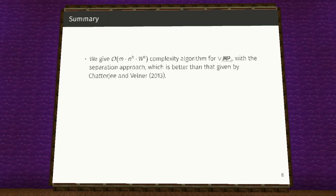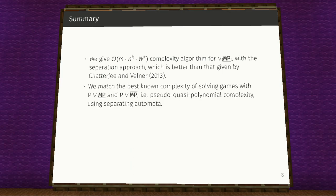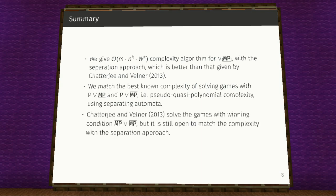To summarize we give a better complexity algorithm for combination of multiple mean payoff with infimum objective with the separation approach. We match the best known complexity of solving games with parity or mean payoff using separating automata. We do not know how to construct separating automata for combination of multiple mean payoff objectives with limit supremum and leave it as an open question.